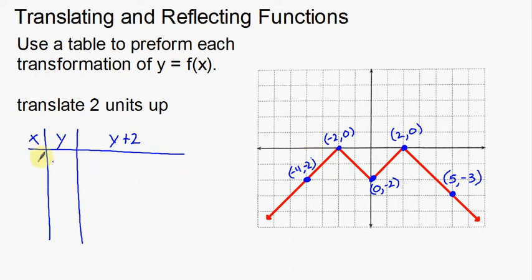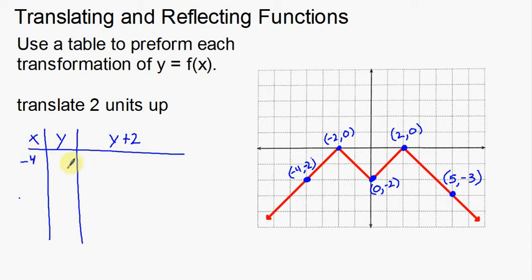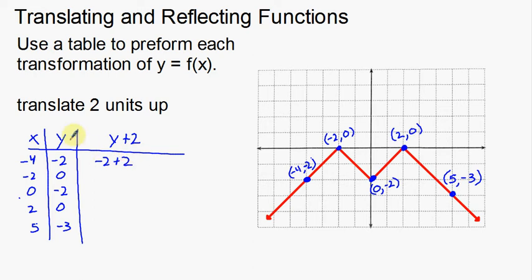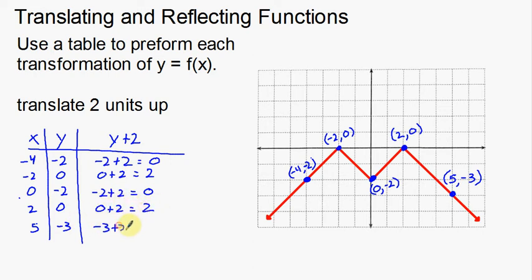I'm going to take all my points and put them in my columns. So: negative 4, negative 2; negative 2, 0; 0, negative 2; 2, 0; and 5, negative 3. Now I'm going to add 2 to the y coordinates — this is going to be very fast. Negative 2 plus 2 gives 0; 0 plus 2 gives 2; negative 2 plus 2 gives 0; 0 plus 2 gives 2; and negative 3 plus 2 gives negative 1.